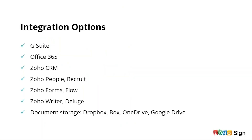Zoho Sign offers tight integration with popular Zoho apps and third-party apps. We offer integration with productivity suites like G Suite and Office 365. We also offer integration with Zoho CRM, our HRMS suite like Zoho People and Zoho Recruit, as well as Forms, Flow, Writer, and wherever there is a possibility of document signing within the Zoho ecosystem. Apart from this, we also offer integration with cloud storage services like Dropbox, Box, OneDrive, and Google Drive to help you easily manage, import, and export your signed copies.